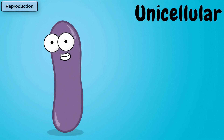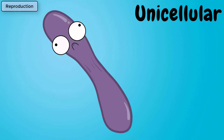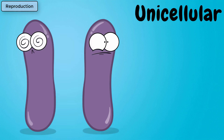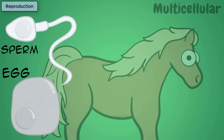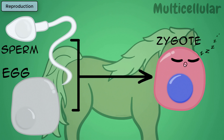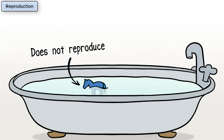Reproduction. This can be very simple, like unicellular bacteria which can copy DNA and split into two. Or it can be more complex, like this living pony, which involves sperm and egg cells uniting to make a fertilized egg known as a zygote, which will eventually develop into a baby pony. No reproduction for this Bathtub-Grown Pony.